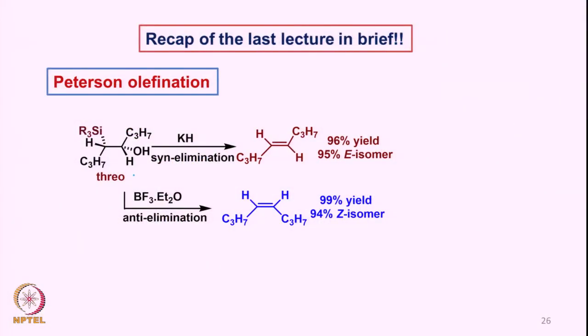We discussed the mechanism of Peterson olefination, where we saw a four-membered oxygen-silicon containing intermediate. A beta-silinol having a 3O configuration can lead to formation of the E isomer under basic conditions, and under acidic conditions it can undergo anti elimination to form the Z isomer. We discussed the mechanisms in detail.